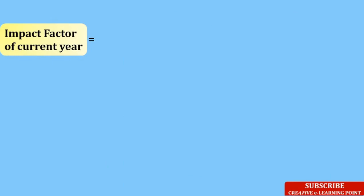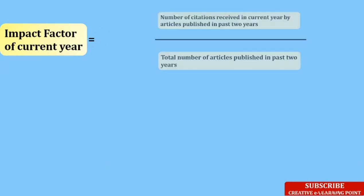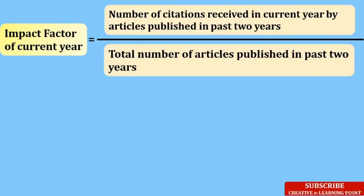Let's see how to calculate the impact factor of any journal. To calculate the impact factor for the current year, I need to know how many articles are getting cited in the current year from the past two years, divided by the total number of articles published in the past two years.